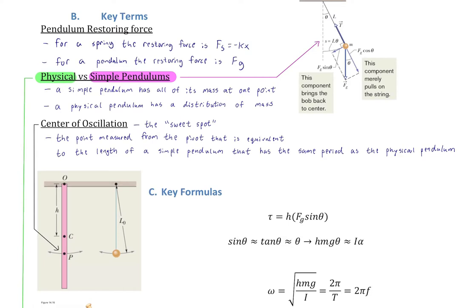The center of oscillation is the point, measured from the pivot, that is equivalent to the length of a simple pendulum having the same period as the physical pendulum. In a sense, it's almost like simplifying a physical pendulum into a simple pendulum. If you replaced the physical pendulum with a simple pendulum of the same period, you'd want its length to equal the distance from the pivot to the center of oscillation.